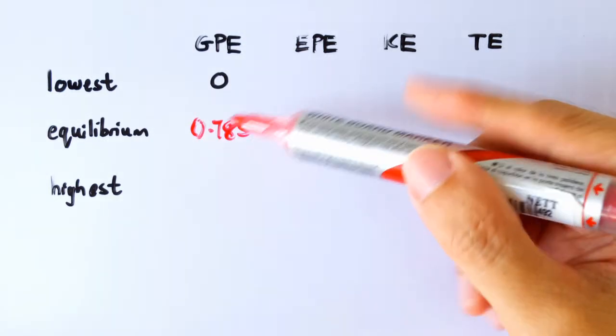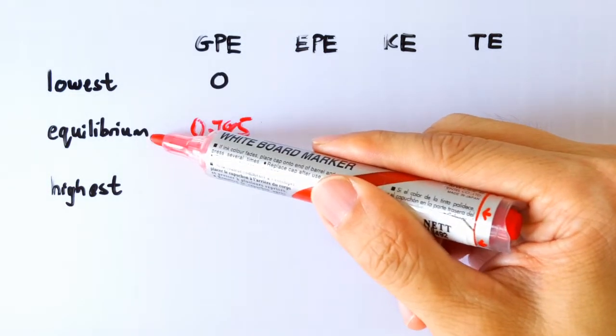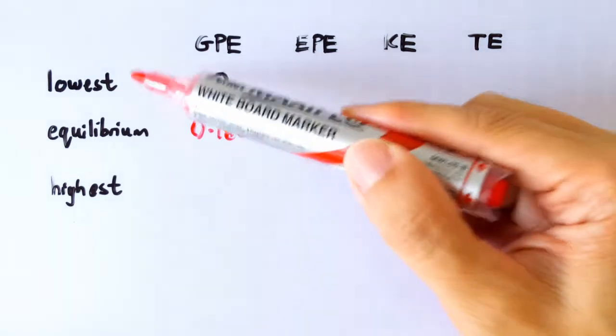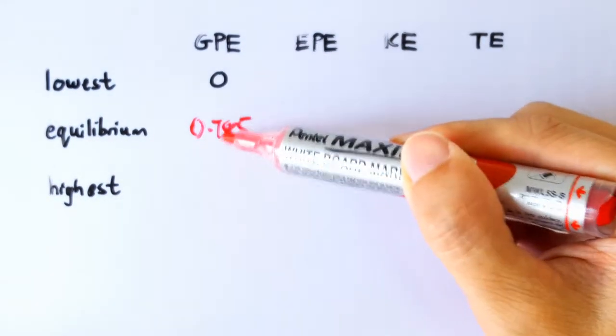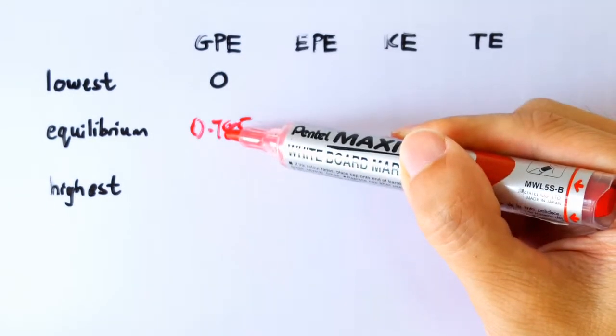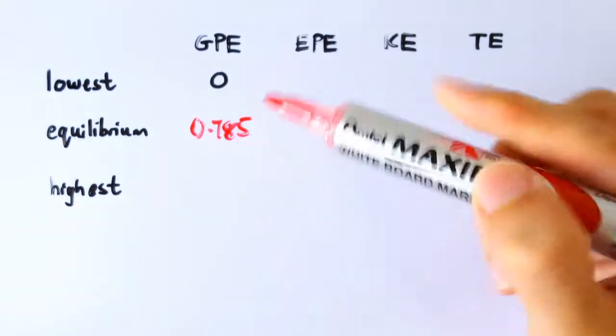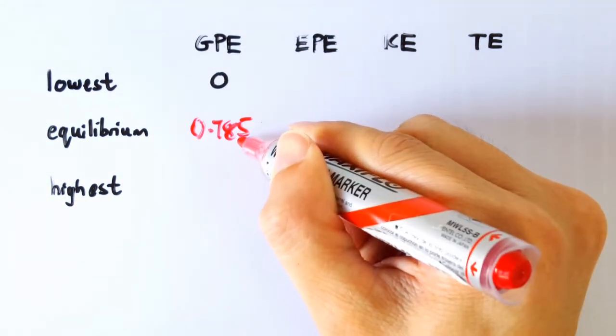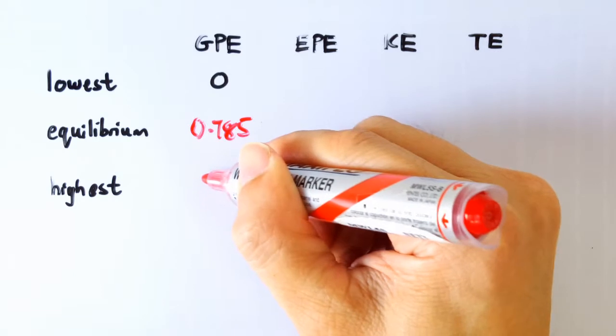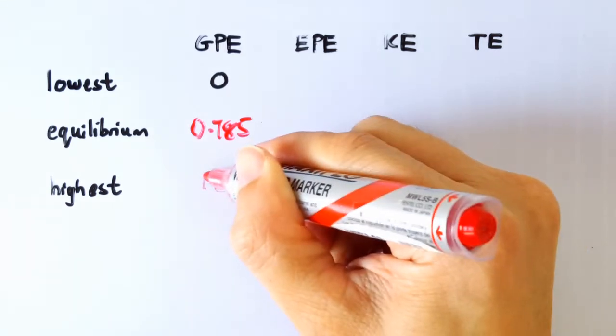It actually corresponds to the change in going from here to here, which should be the same as the change that goes from here to here. Alright, so when we go from here to here, the GPE should increase by yet another 0.785. So we are going to take this number, add another 0.785, and we get this number, 1.57.